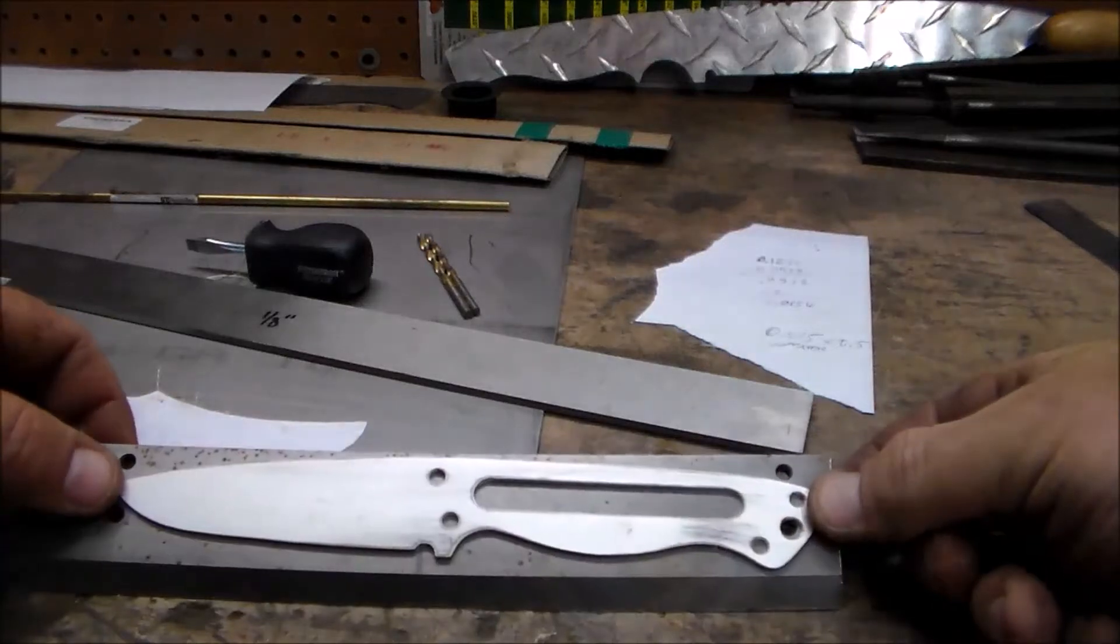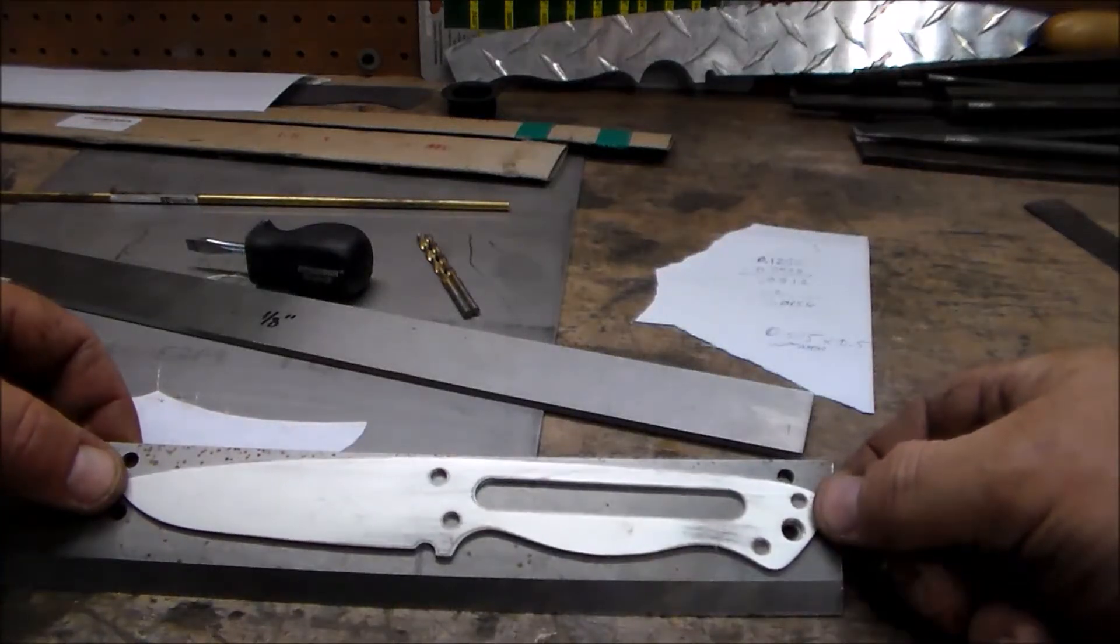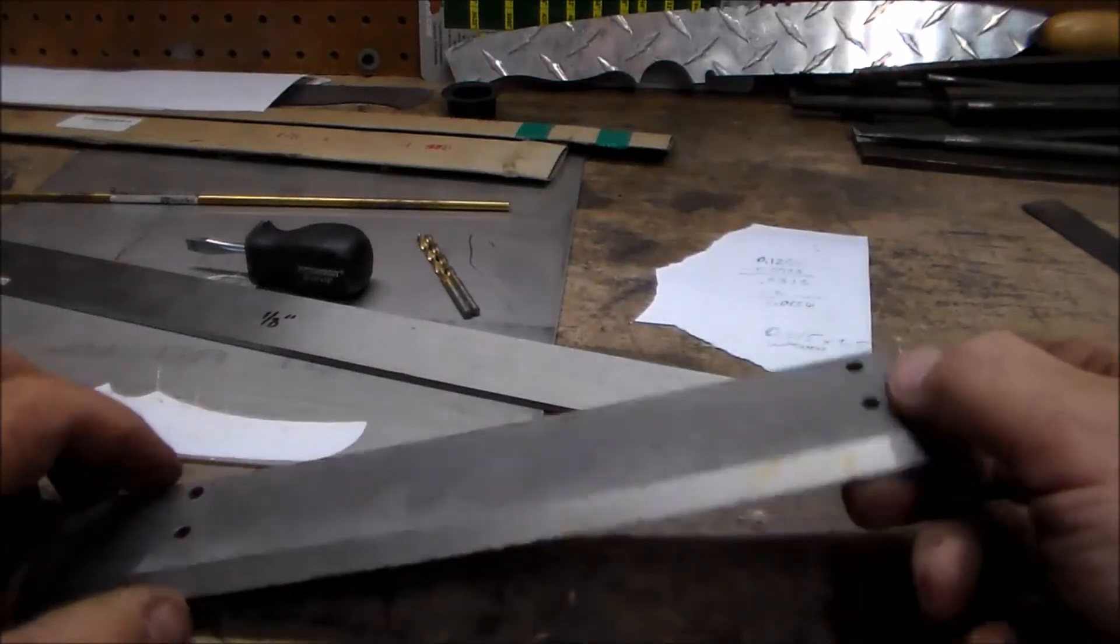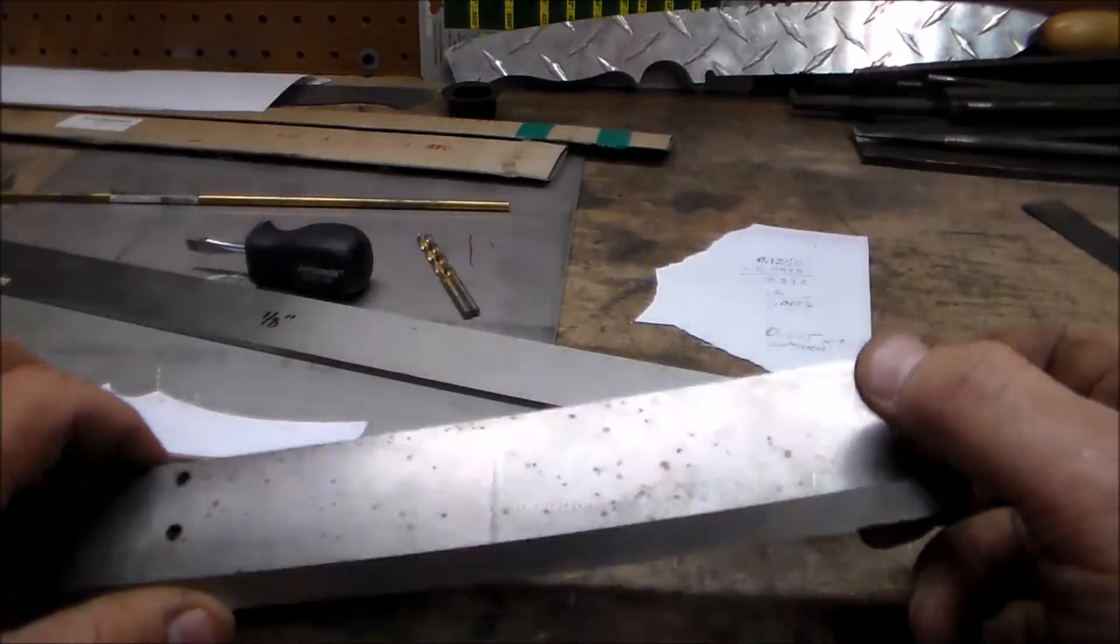So there's enough steel there to make this knife, of course, without all the holes. But the reason I'm not worried about the holes, this first one, we believe this is D2.